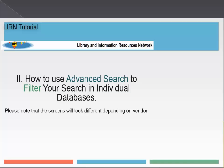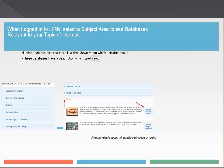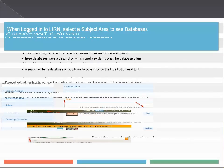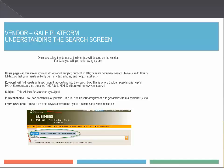When logged into LIRN, select a subject area to see databases relevant to your topic of interest. Under each subject area, there is a drop-down menu which lists databases. These databases have a description which briefly explains what the database offers. Most of the databases include e-articles, e-books, videos, newspapers, and other resources. To search within a database, all you have to do is click on the blue button next to it. Let's search in a Gale database to see what this vendor provides and what the search screen looks like. Here is what the homepage and search box look like in this particular database. Please take your time to explore what tools and search options Gale has to offer.